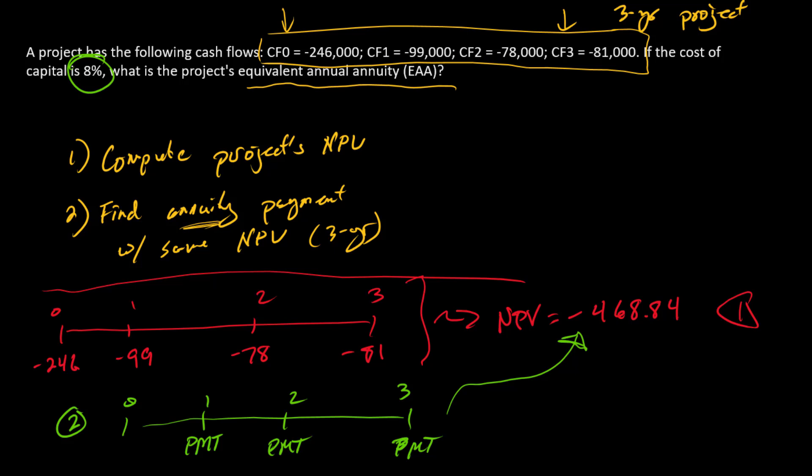So I'm going to go straight into my calculator and just show you the answer. So I'm going to set the present value equal to minus 468.84. Of course, there's a zero future value. Three is n. I is eight. I compute the payment. I get 181.93. So payment equals 181.93.